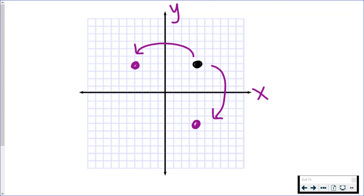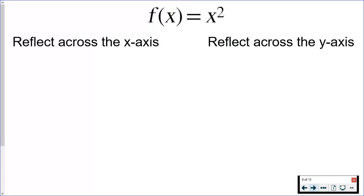So reflection across y means x is changing; reflecting across x means y is changing. Here's an example using the quadratic parent function. I'm going to reflect it across the x-axis and then also reflect it across the y-axis.